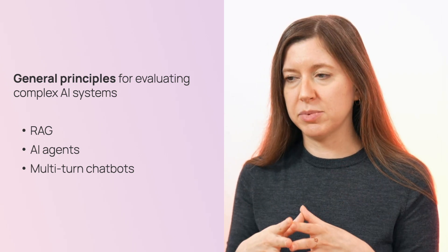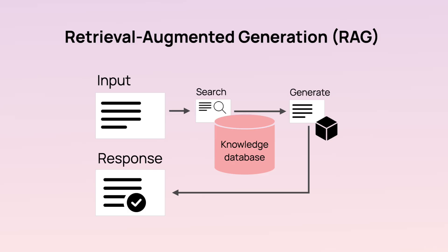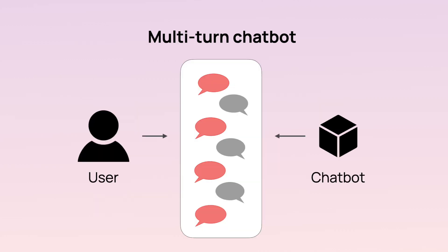First, a reminder of what we mean. A RAG system is a system that first queries the source you gave it to find relevant data and then generates the response based on it. This could be a component of a chatbot or an agent, or a standalone tool like a smart search bar. Chatbots hold complete conversations with the user, which is where the evaluation complexity comes from — you must evaluate the full conversation, not just a single input and output.